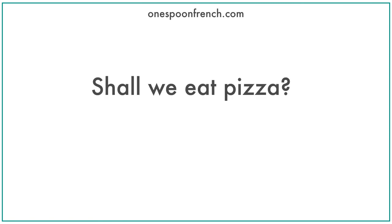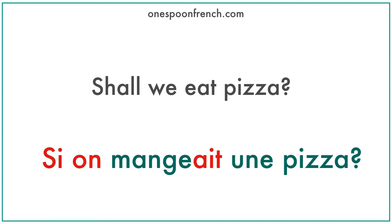Let's practice the last example — we're almost there. The word 'pizza' is a feminine word in French, so we have to say 'une pizza.' And 'mangeait' is the third person imperfect verb form of 'manger.' So if you want to eat pizza with someone, you can simply say: 'Si on mangeait une pizza.'